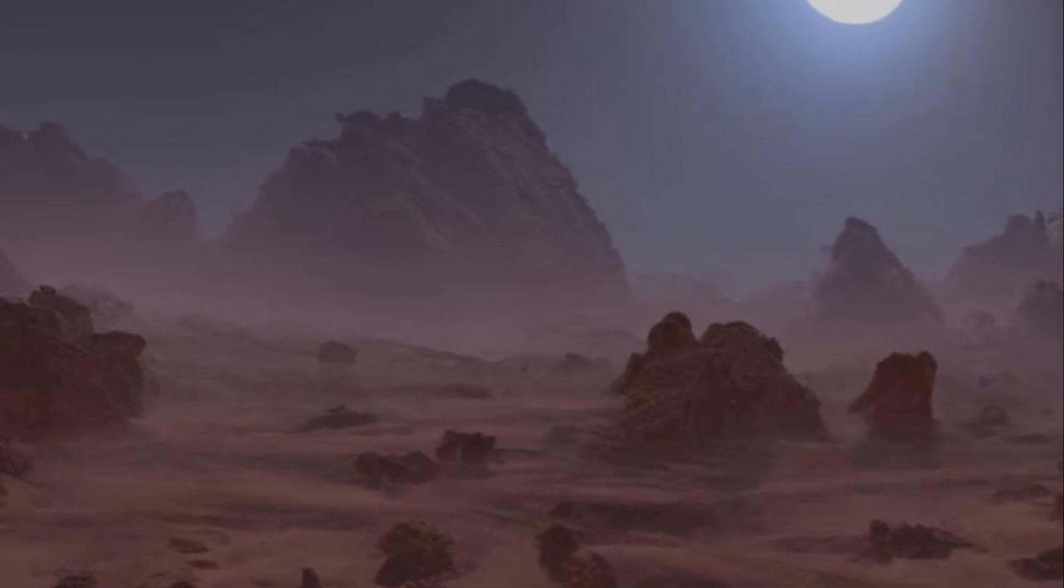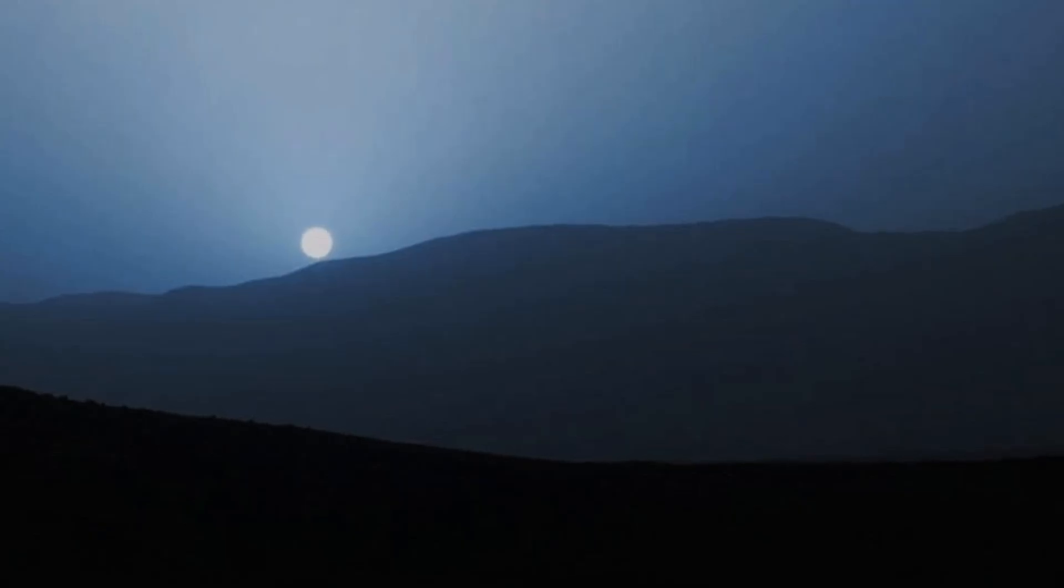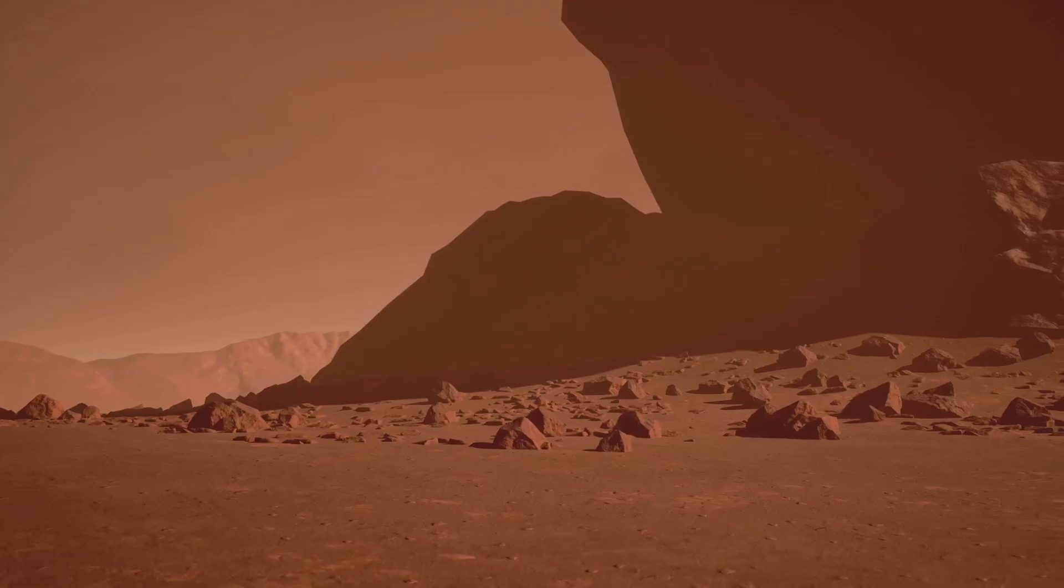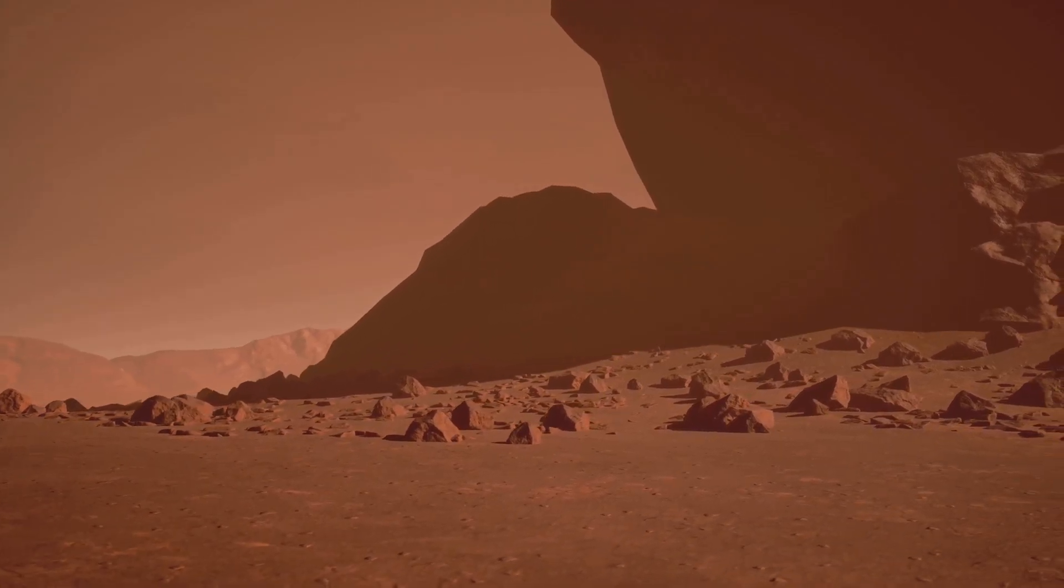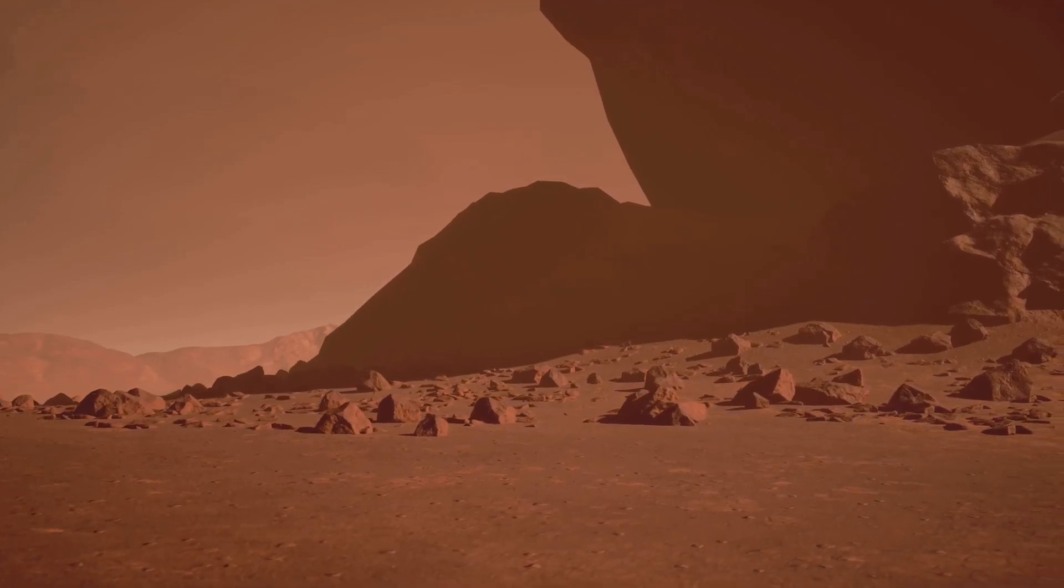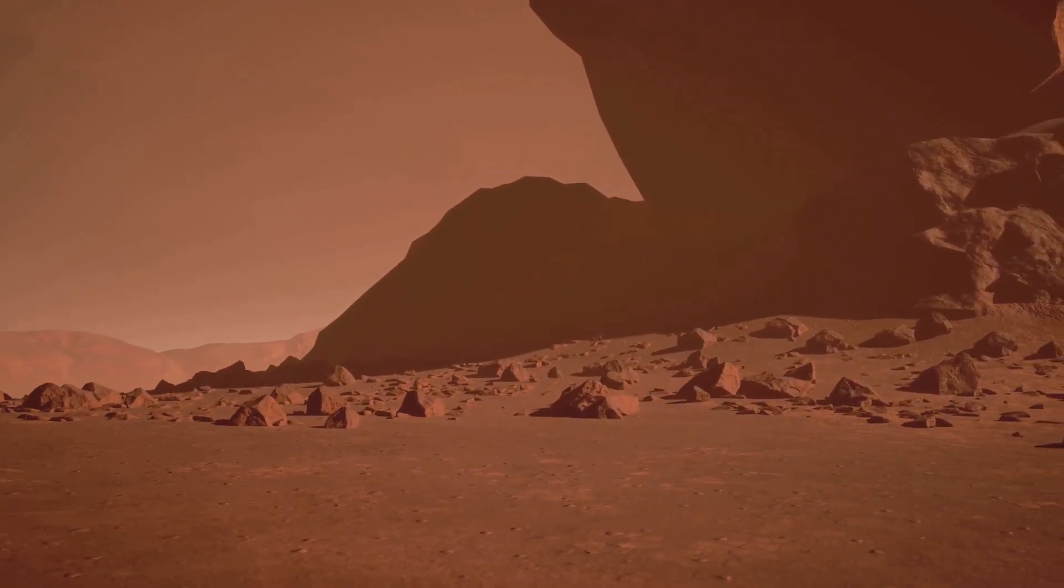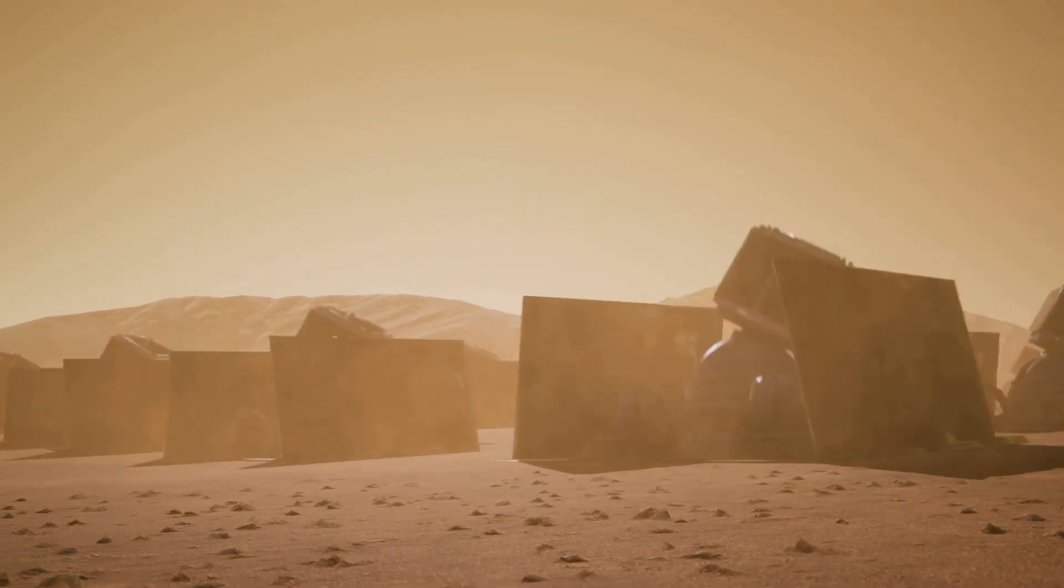Indeed, this red planet, famously recognized for its rusty landscape, presents a strikingly distinct spectacle as the day concludes. Contrasting our Earth, where sunsets project a warm orange radiance, Martian sunsets envelop the landscape in cool blue shades. What's the reasoning behind this breathtaking view?